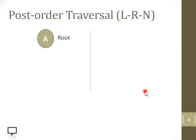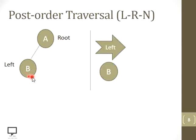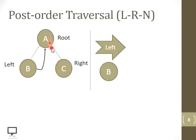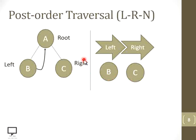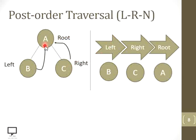Let me explain this with a simple example. If we have a root node A with its left child B, we step down to the left child B and process it. After this, we return back to the root node and check for a right child. Since it is present, we step down to the right child and process it. Again, from the right child, we return back to the root node because we have done with the left sub-tree and the right sub-tree, so now it is the turn to process the root node.